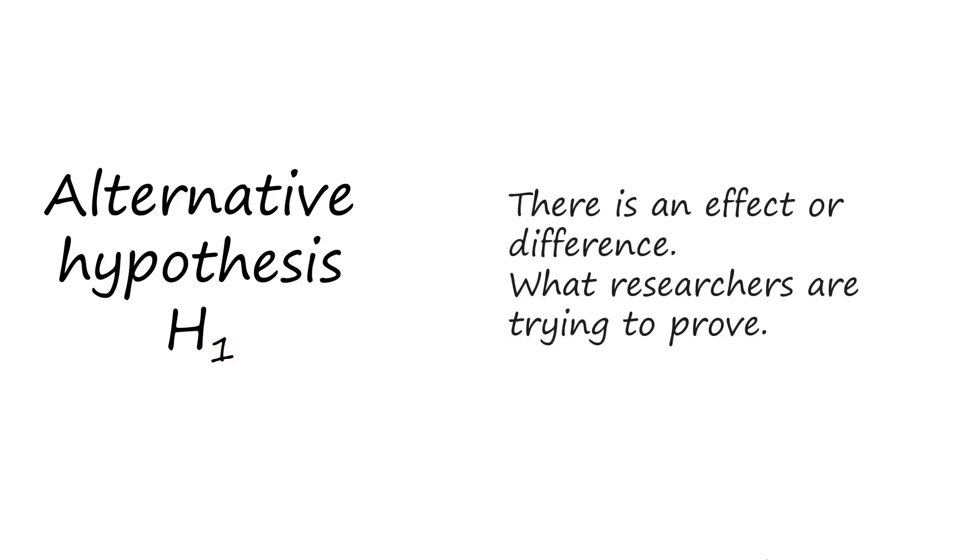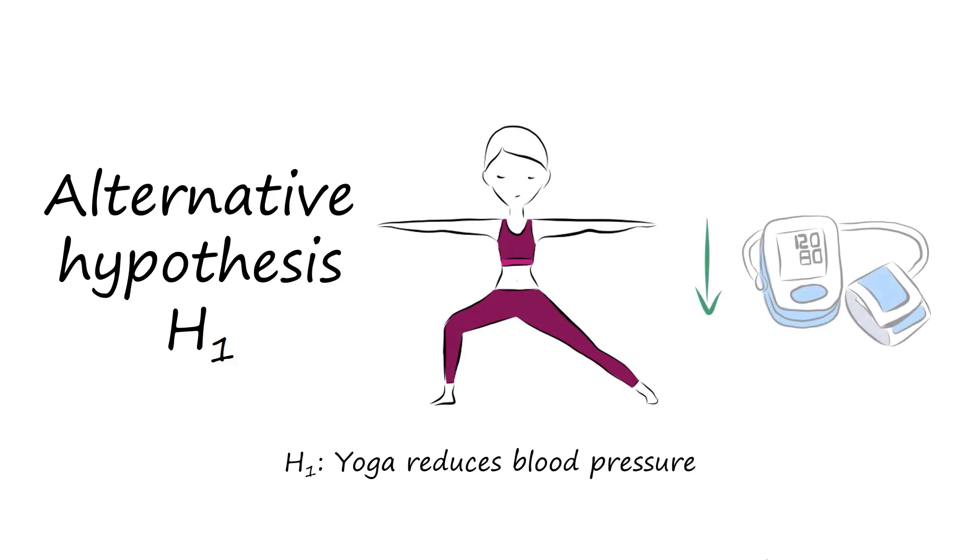An alternative hypothesis is the opposite of a null hypothesis. This is a statement that there is an effect or difference. This is written as H1. In science, this is what the researcher is trying to prove. An example of an alternative hypothesis is that practicing yoga reduces blood pressure.